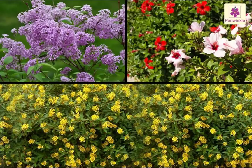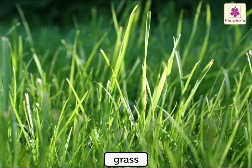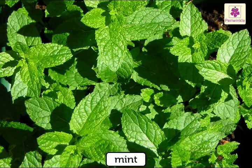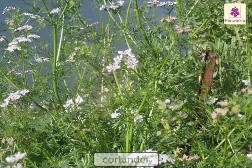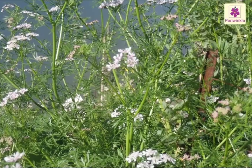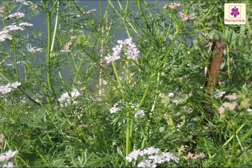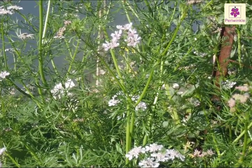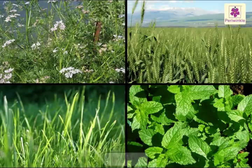Plants like grass, wheat, mint, and coriander, which are small and have soft stems, are called herbs.